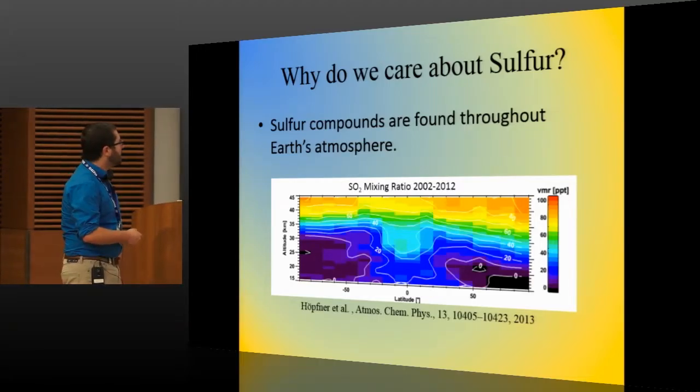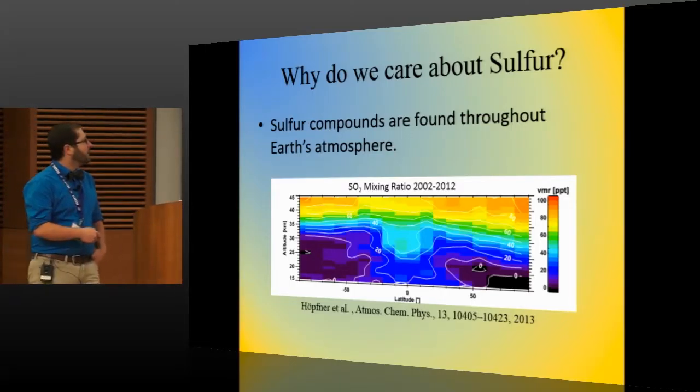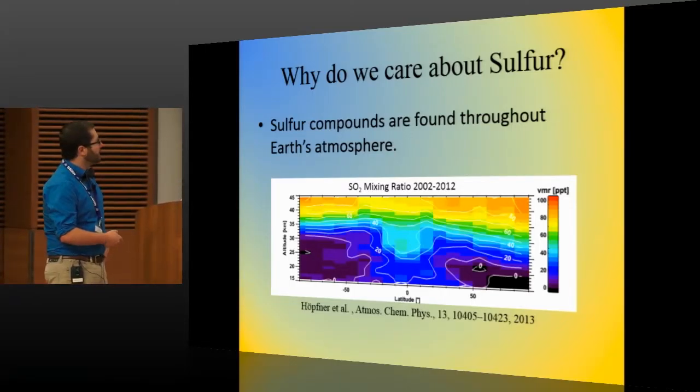And down in the lower troposphere, they mostly get rained out because they're particularly good at being dissolved in the rain. But up in the upper stratosphere, we see this increase in SO2.